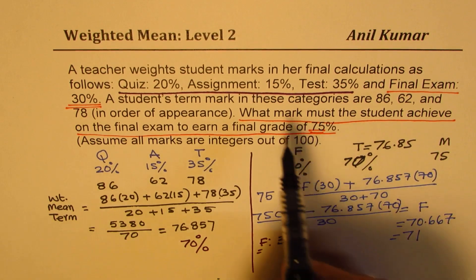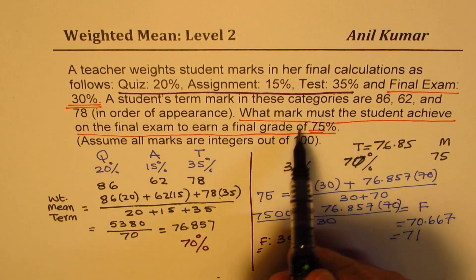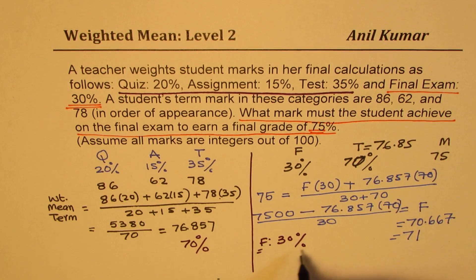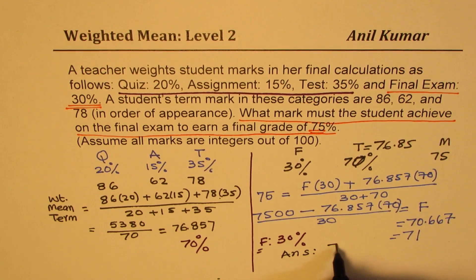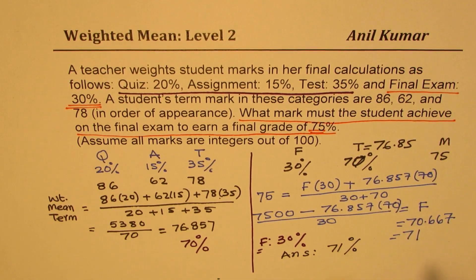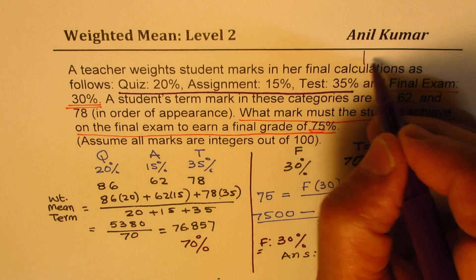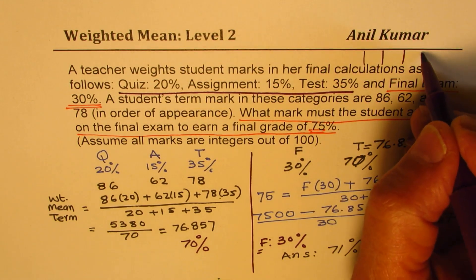So our answer is 71. To get an average grade of 75% in the final, we have to score 71% at least, right? So that is the mark. So our answer here is 71%. When you're grading in this number, no need to write the percent sign, correct? So you'll just grade in 71.